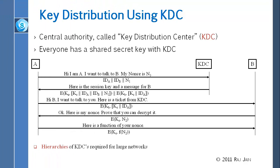Now the problem is how do we get the master key? One common method is called KDC — Key Distribution Center. There is one server that has a shared secret with everybody else, so you only need N keys for N people, since each person has a secret with the KDC. When A wants to talk to B, this is how it works.